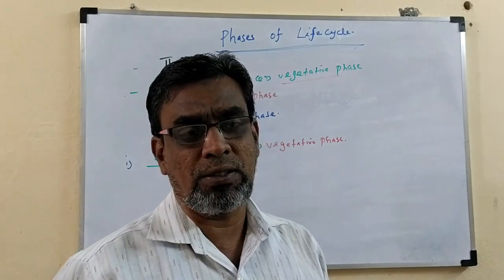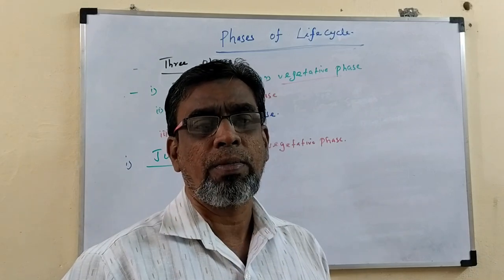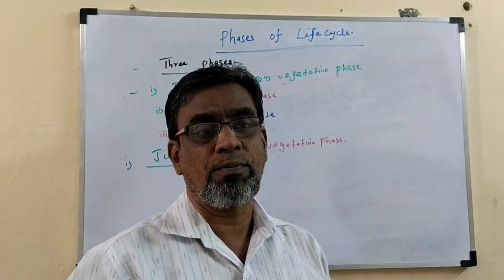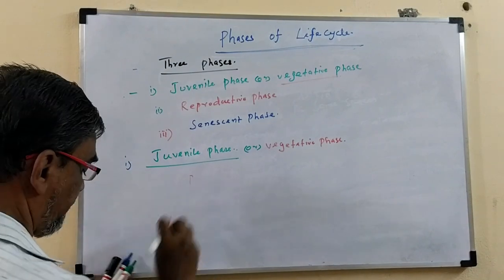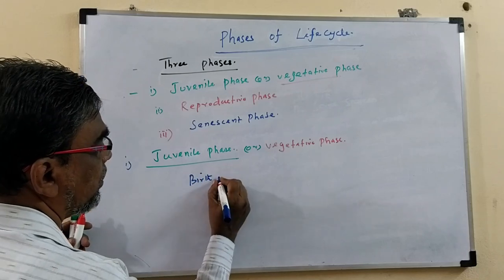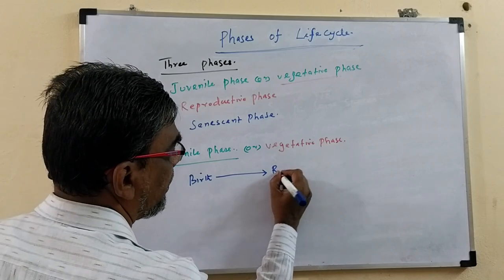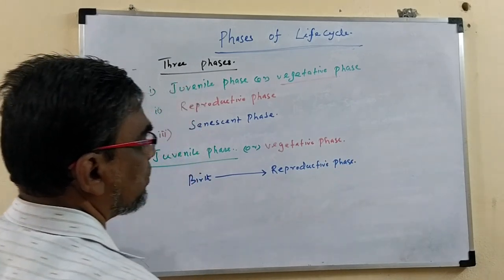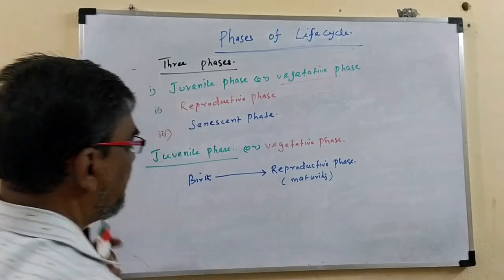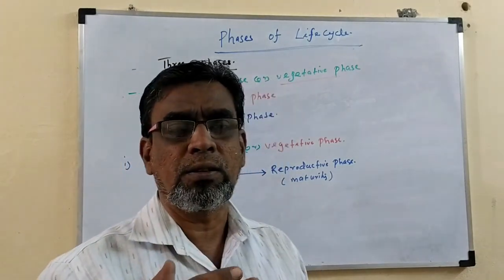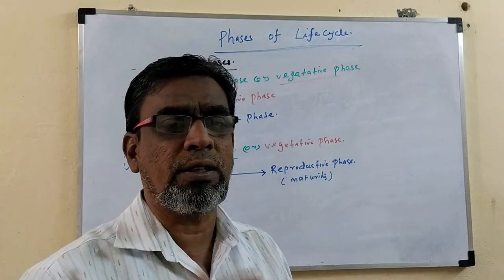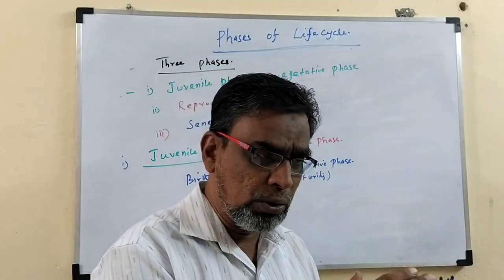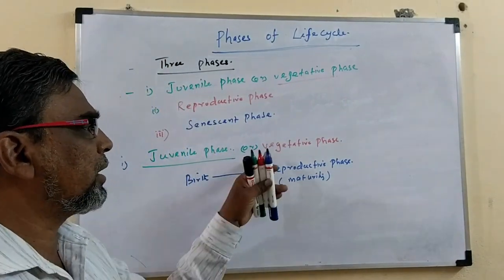What is the significance of the first phase? That is called the juvenile phase. Juvenile means young ones. From birth up to the adult or maturation stage, that period is called the juvenile phase, otherwise the vegetative phase.